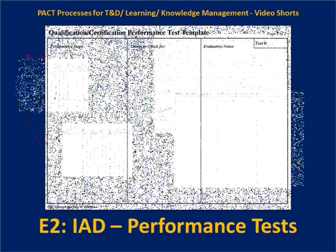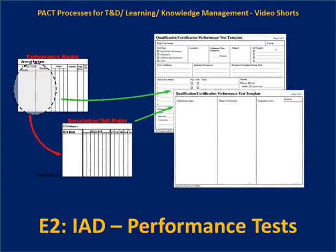The content for a qualification or certification performance test comes from the performance model itself, which identifies the tasks to be performed and the outputs and their measures. More detailing may happen when creating the actual test than is on the performance model — that's a function of how detailed one went when generating the performance model data: is it at a macro high level, some mid level of detail, or the micro level where it says 'press enter now'? The same applies to enabling knowledge and skills and the level of detail captured there — but these two sets of analysis data feed the development of a performance test.